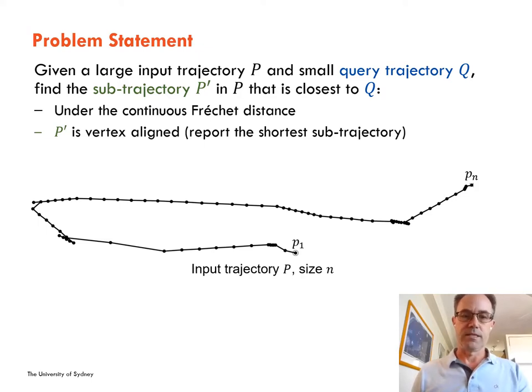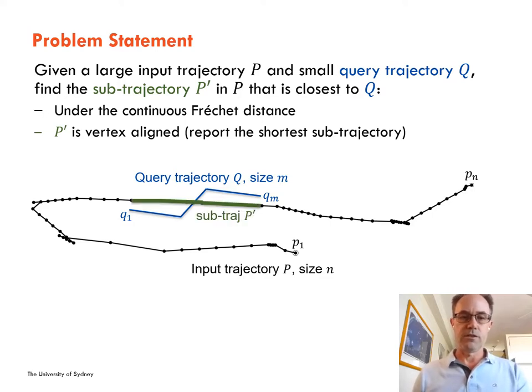In the example, a single input trajectory p is shown in black and is size n. The query trajectory is in blue and is size m, and the closest sub-trajectory P' is in green.